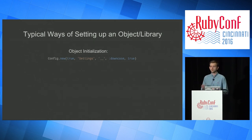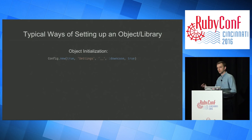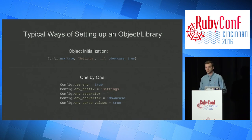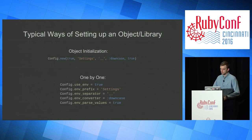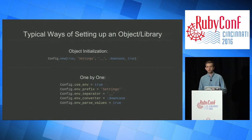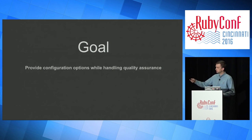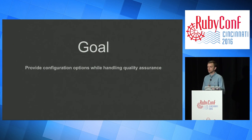We can't rely on defaults because we have to pass in a value every time. A better approach solves both problems — you don't have to provide a value for every single configuration option and you don't have to rely on order. But the problem you run into is that a user can set these values up pretty much anywhere they want. We're just looking at providing configuration options while still handling quality assurance for the user.